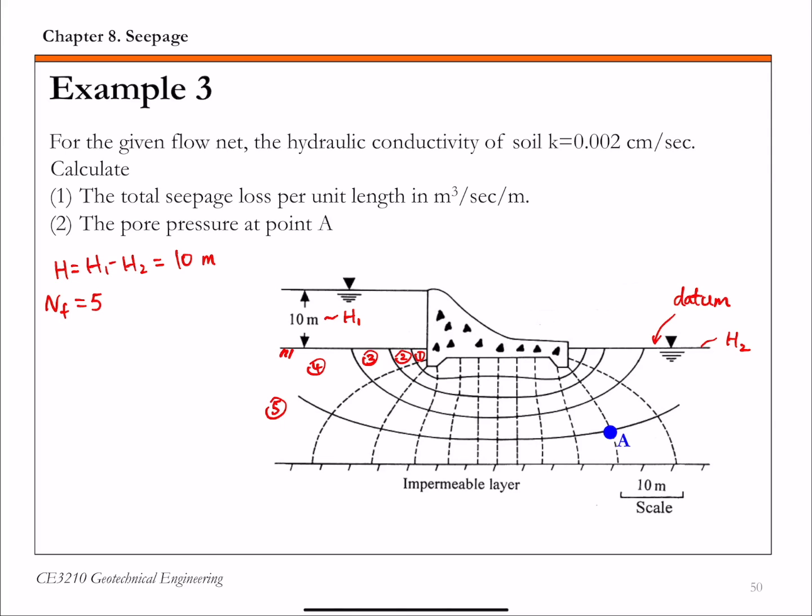And then the number of equal potential drop, potential drop, or a number of potential drop. So if we start from upstream, so let's use this bracket 1 here, and 2. If you count 3, 4, 5, 6, 7,